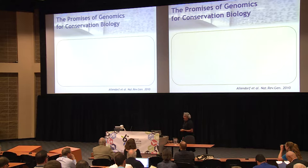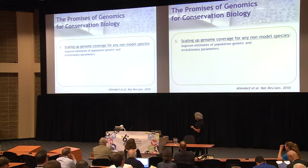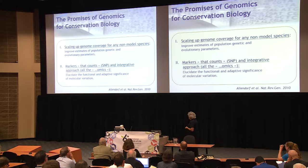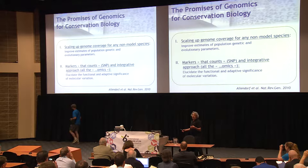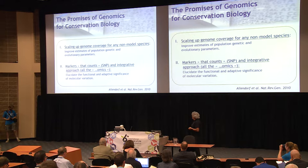Basically, that stems from three main points. First, because it offers the potential to scale up genome coverage for any non-model species, and in doing so, improving estimates of population genetic and evolutionary parameters. As well, we hope to target markers that count — regulatory or functional SNPs — going towards a truly integrative approach, basically all the omics, towards elucidating the functional and adaptive significance of molecular variation.